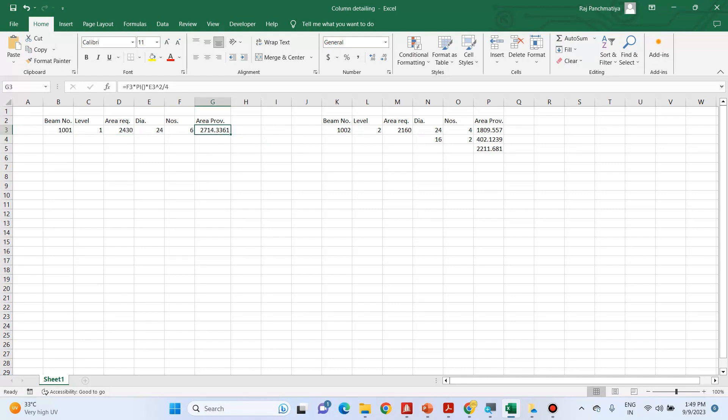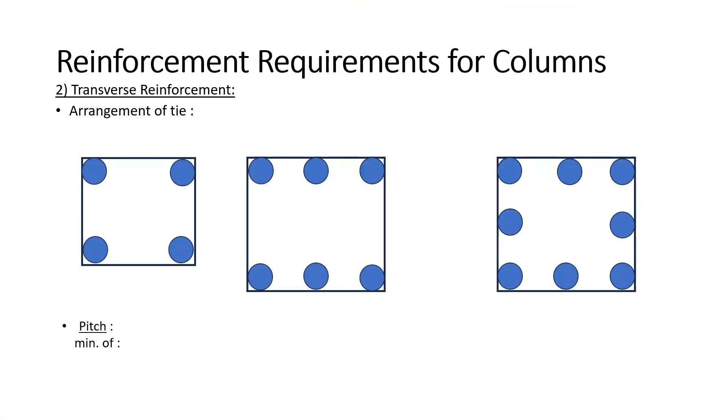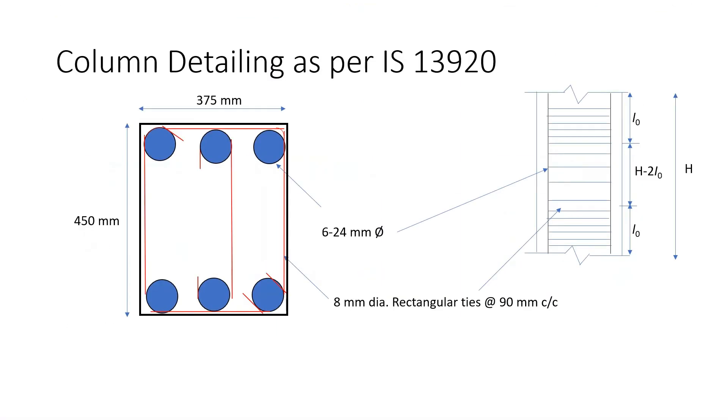Now let's discuss how to detail this column. So what we have done is we have provided 6 bars of 24 mm dia like this.